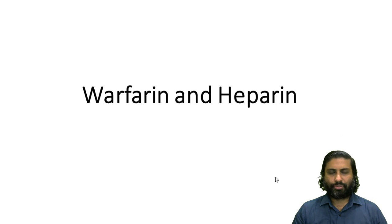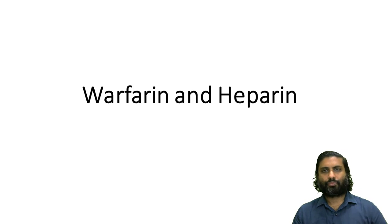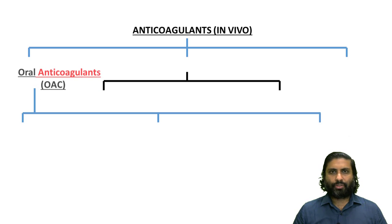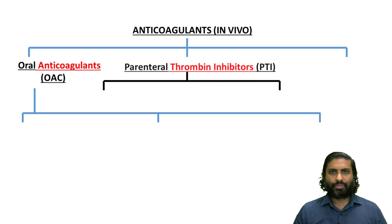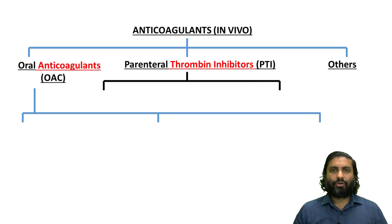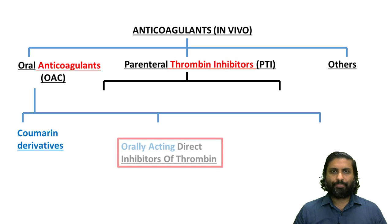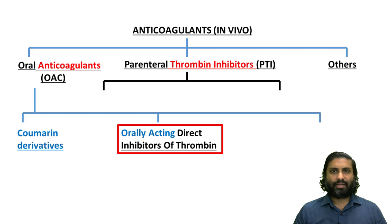In this video, we shall continue our discussion on heparin and warfarin. Anticoagulants may be broadly classified into oral anticoagulants, parenteral thrombin inhibitors, and others. The oral anticoagulants may be classified into coumarin derivatives, otherwise called the vitamin K antagonists, the orally acting direct inhibitors of thrombin, and the orally acting direct factor 10A inhibitors.